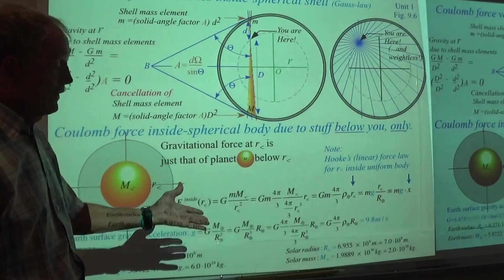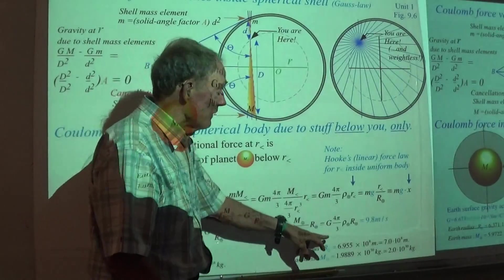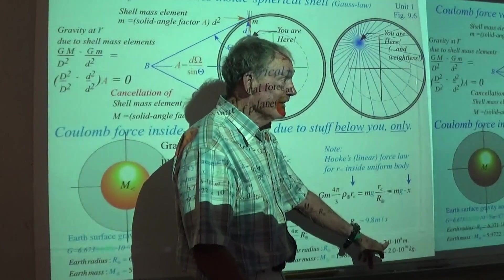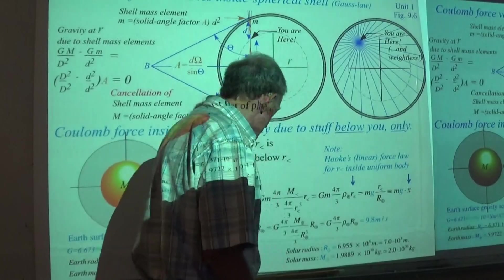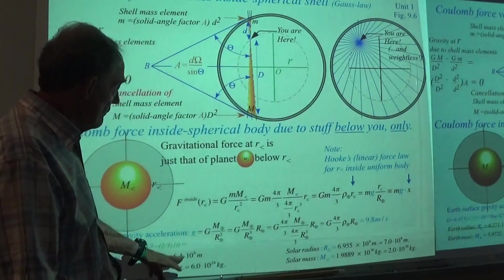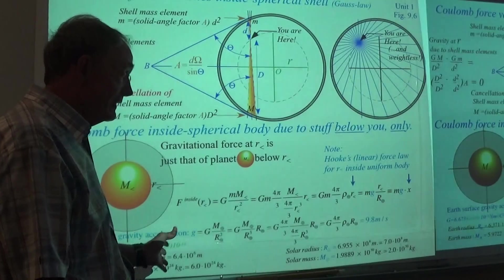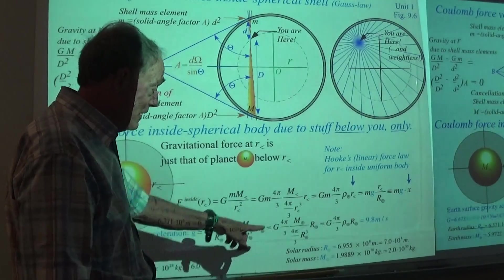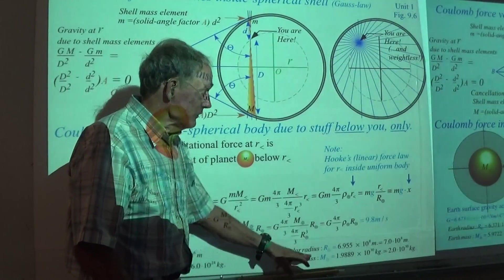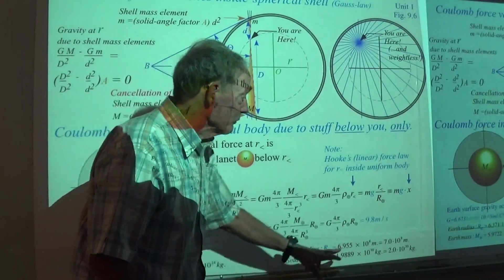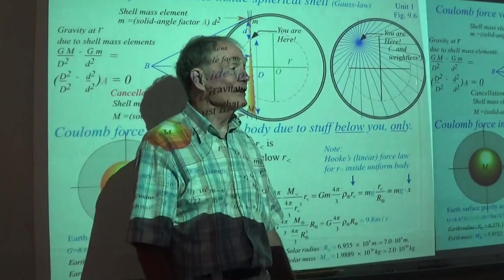Now the sun does pretty well as well as 6955, well that's pretty close to 7, isn't it? 7 times 10 to the 8th compared to 6.4 times 10 to the 6th. It's a big ratio. We're tiny compared to that guy. And the mass, even more so, but it's also pretty easy, 2 times 10 to the 30th.